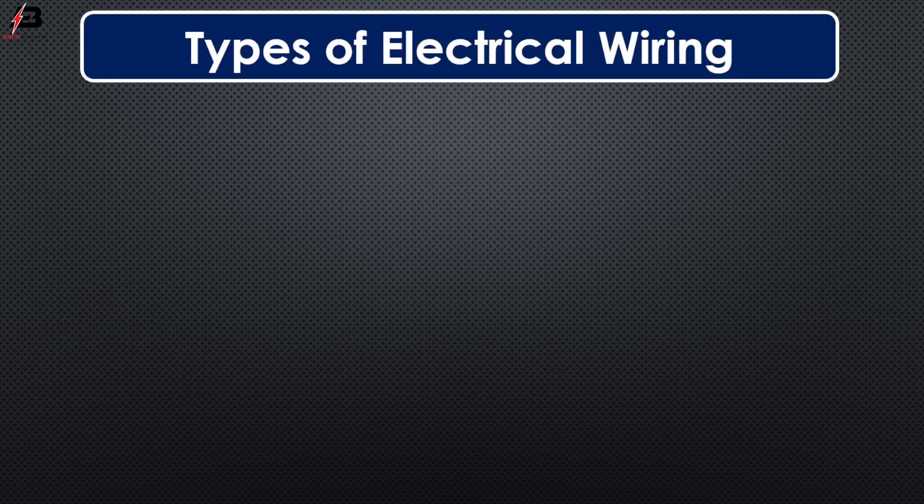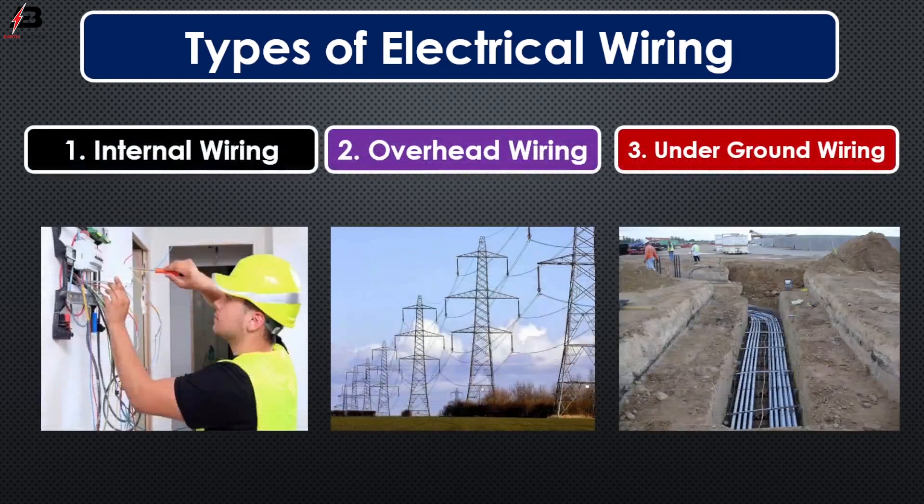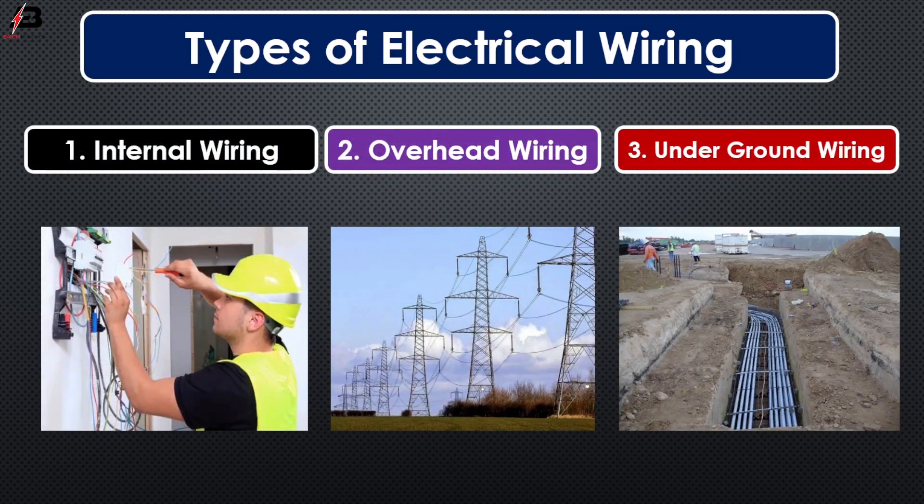Types of electrical wiring. Number 1: Internal wiring. Number 2: Overhead wiring. Number 3: Underground wiring.